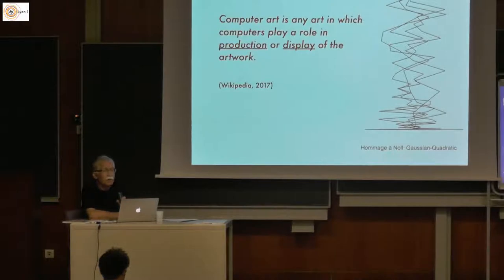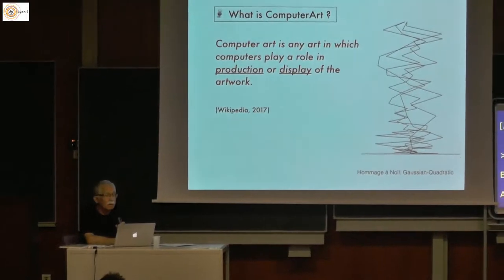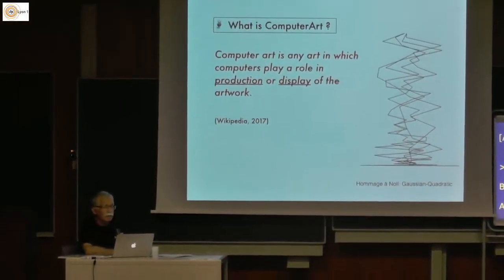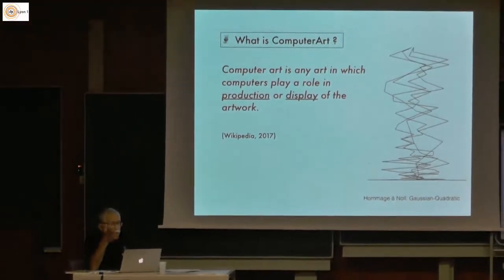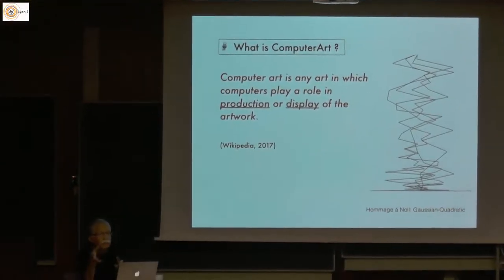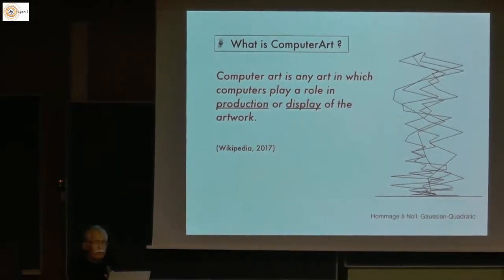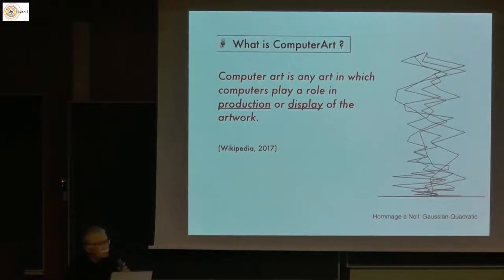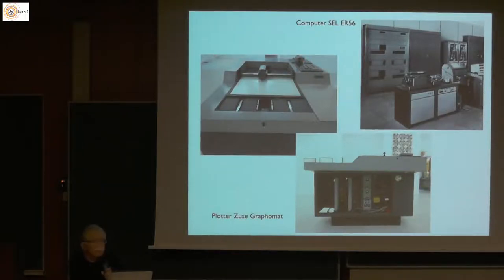What I mean when I use the term computer art: this is a definition from Wikipedia. Computer art is any art in which computers play a role in production or display of the artwork. This definition applies, on the one hand, to the software — the programs with which the data to be displayed are generated — and on the other hand, the hardware, that is the computers on which the programs are running, as well as the output devices. In our context, it's more important that computer art is also a direction in art, a genre, that lasted from 1965 to about 1980.